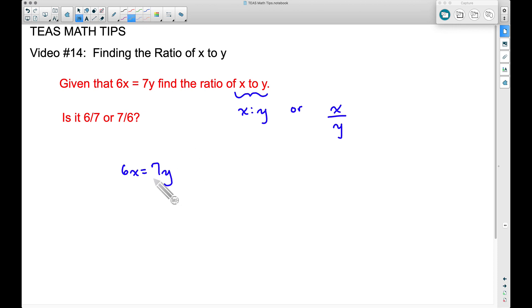I'm going to move this y here and divide by it on both sides of the equation. If we take 7 times y and then divide by y, these cancel out.